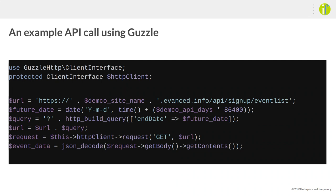Here's an example call using Guzzle, which is built into Drupal core. I'm constructing the URL — this is a service used by libraries to post events. I'm sending a request for the website where events are, and how many days back I want: 86,400 is the number of seconds in a day. I do the request, Guzzle sends me back contents — in this case a JSON array — I use json_decode, and I now have event data. This particular piece of code is from a cron job that then updates events accordingly.